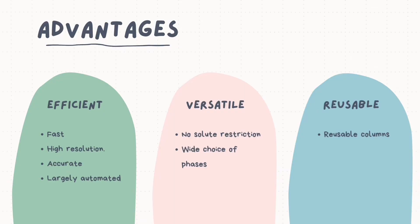Now let's look at the advantages of the HPLC method. Firstly, it is efficient — the process can be completed quickly within approximately 10 to 30 minutes and delivers high resolution. It is also accurate and largely automated, meaning basic HPLC runs can be performed with minimal training. Secondly, HPLC is versatile, not being restricted to particular types of solutes, with a wide choice of mobile and stationary phases. Lastly, the columns are reusable and do not require constant repacking with porous medium.